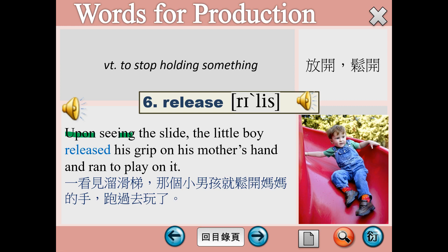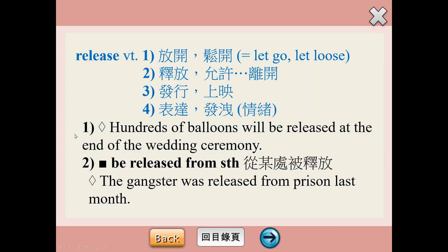如果還原成as soon as這個連接詞的話，就是as soon as the little boy saw the slide。所以如果下次遇到as soon as的時候，也可以用upon加V-I-N-G的用法去做取代。Slide在這裡就是溜滑梯，他就放開了原本緊握在媽媽手上的手，然後ran to play on it，就跑過去玩溜滑梯了。